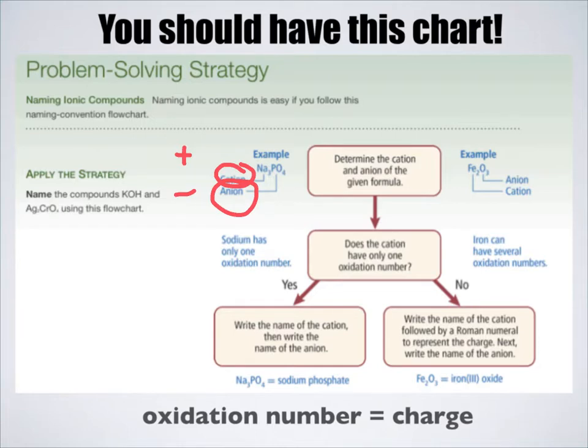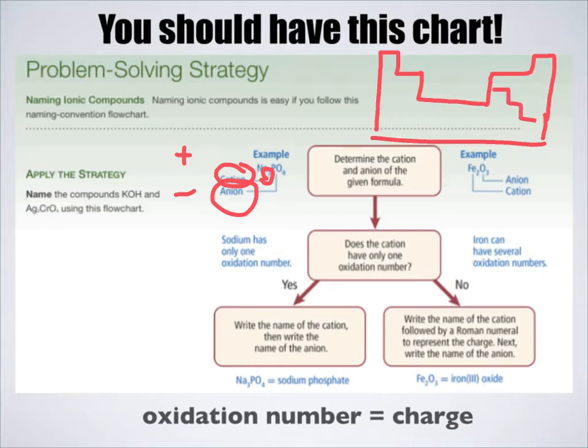In order to determine what the subscripts are in our compounds, we have to know what the charge of the substance is. Remember, metals - here's my really hastily drawn periodic table - metals are found to the left of the zigzag line, and this entire region is very positive. This region over here where the non-metals are, to the right of the zigzag line, are very negative.